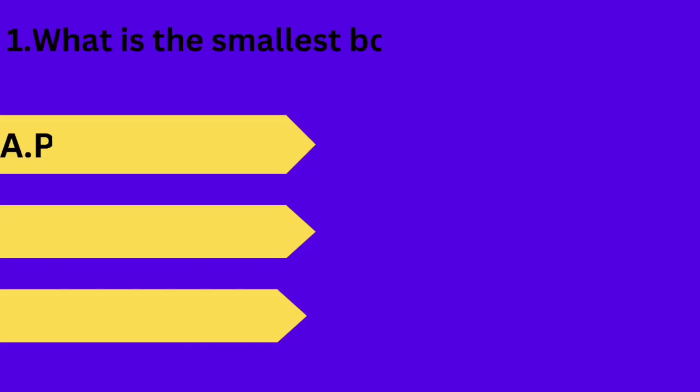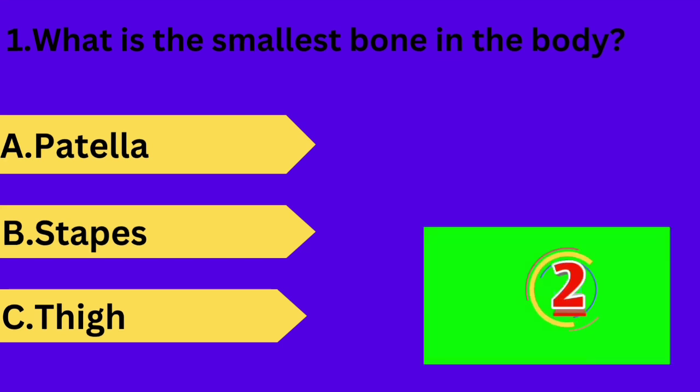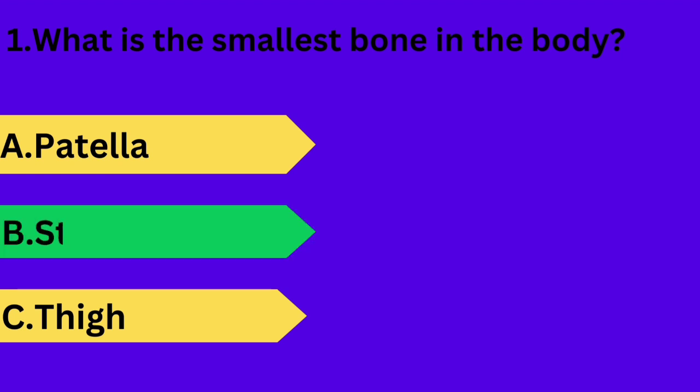First question is: what is the smallest bone in the body? Option A: patella. Option B: stapes. Option C: thigh. Your time starts now. Answer is option B: stapes.